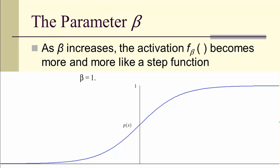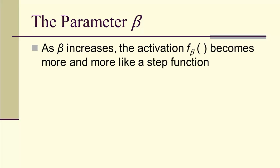Let's look at the parameter beta. As it gets bigger, the activation function actually becomes more and more like a step function. You can see that as beta becomes large, it becomes more and more a jump from zero up to one. That means that p of x is practically one when w dot x is greater than zero. It's practically zero when w dot x is less than zero.